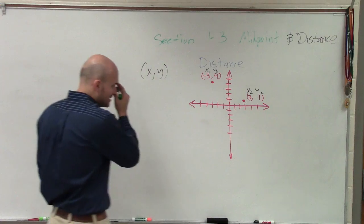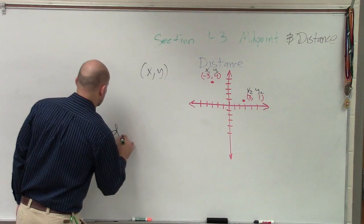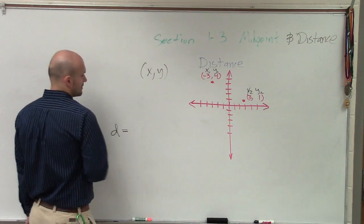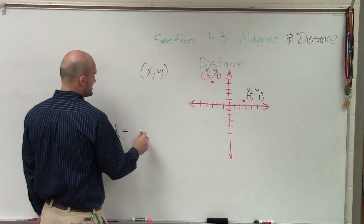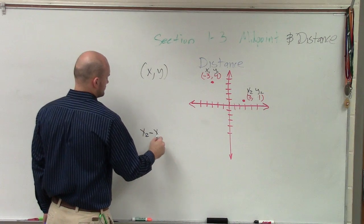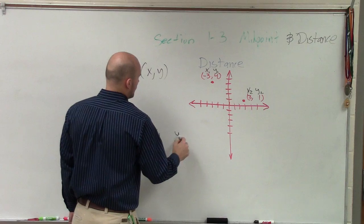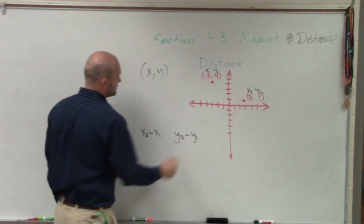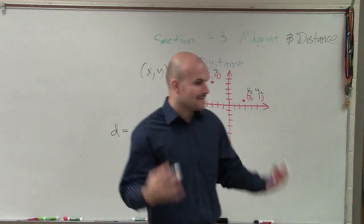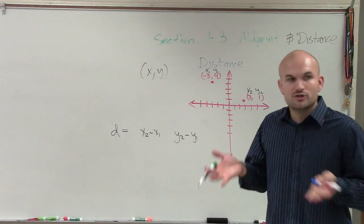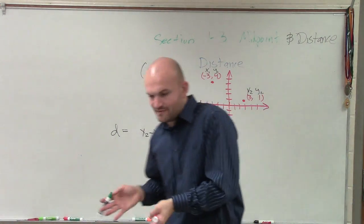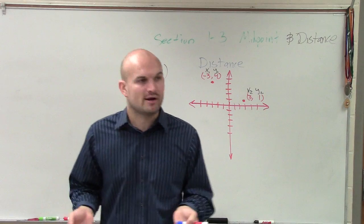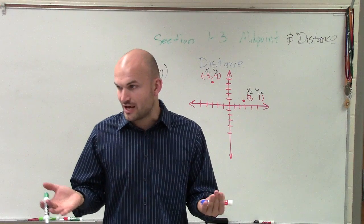So what we have is, if I wanted to find the distance, we're going to have x2 minus x1, and then we have y2 minus y1. Now before, we did something with absolute value. Well, what we're going to do in this case, to produce the absolute value—if I take a negative number or a positive number and I square it, am I always going to have a positive value?